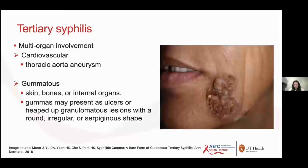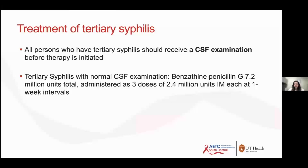Tertiary syphilis is the stage where you classically see heaped-up lesions called gummas. These lesions can appear anywhere — brain, skeletal system, liver, spleen, or any organ including the cardiovascular system. To treat tertiary syphilis, you must do a CSF exam. If the CSF exam is normal, they do not have neurosyphilis, and treatment is similar to late latent: benzathine penicillin three doses at weekly intervals. Think of primary, secondary, and early latent as the same treatment tier; late latent and tertiary as another — three doses of benzathine penicillin.